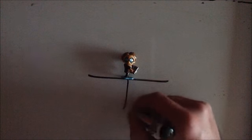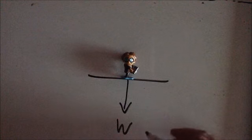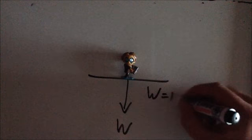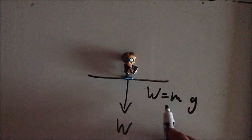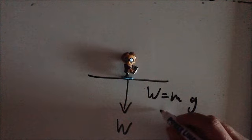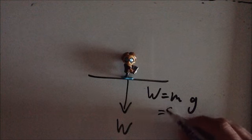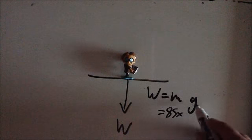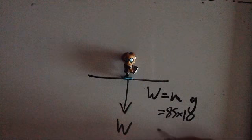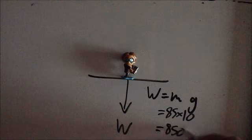The forces acting on him are weight, which is generated by the gravitational field of the earth acting on him. This weight equals mass times the gravitational field strength of the earth. At GCSE, let's say he weighs 85 kilograms. At GCSE we say gravitational field strength is worth 10, so his weight is 850 newtons.